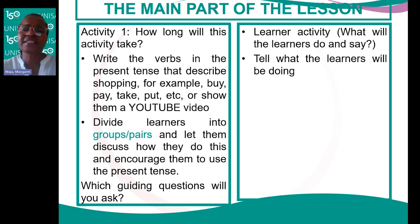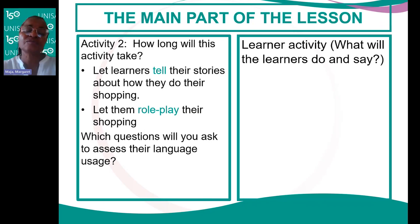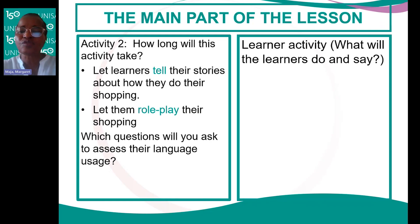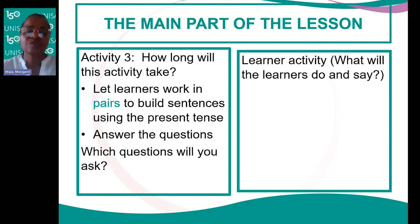While conducting activity one, indicate what the learners will be doing. For activity two, state how long it will take, let learners tell their stories about shopping to their peers, and let them role-play their shopping. Indicate which questions you will ask to assess their language usage and what learners will be doing. For activity three, still within that period, state how long it will take and let learners work in pairs to build sentences using the present tense and answer questions.